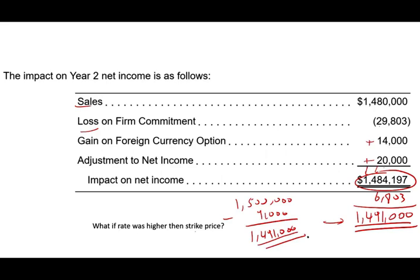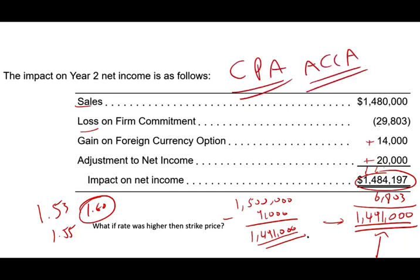What if the rate had been higher than the strike price? If the euro were $1.53, $1.55, or $1.60 — anything above $1.50 — the company would not have exercised the option. They would have sold the euros at the higher market rate and received more than $1,491,000. That's why $1,491,000 is the minimum — you could receive more, but the put option guarantees you won't receive less. If you have any questions, please email me. Good luck, and see you on the other side of success.